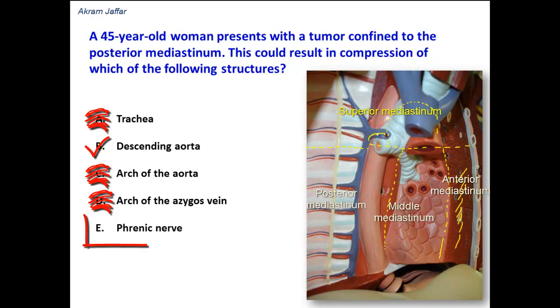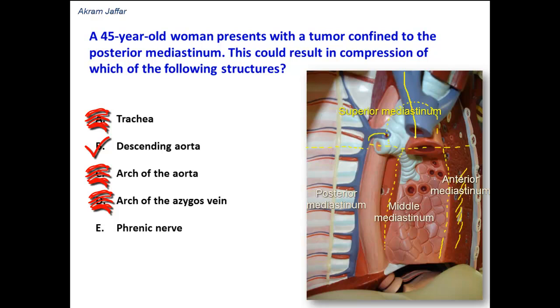The phrenic nerve is located in the superior mediastinum, and then it passes along the pericardium, so it is located in the middle mediastinum and not in the posterior mediastinum.